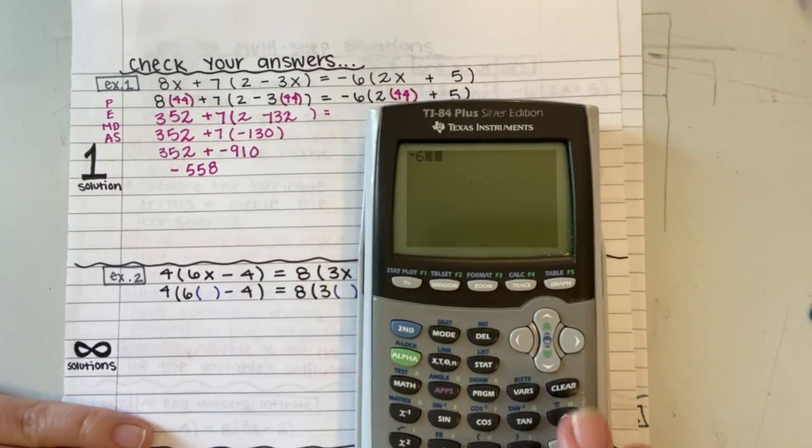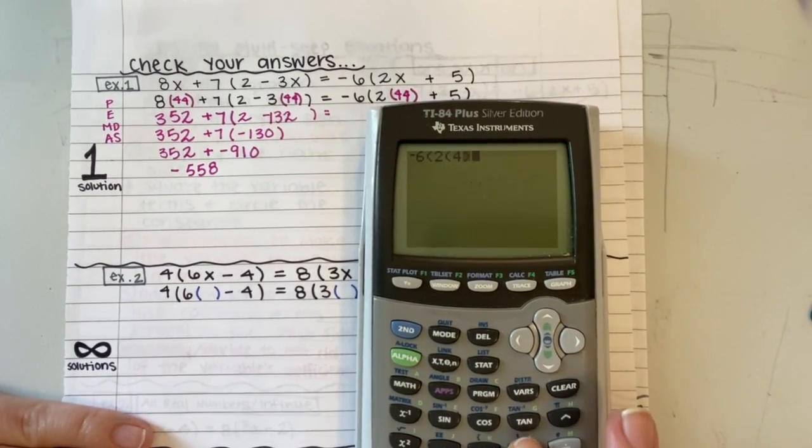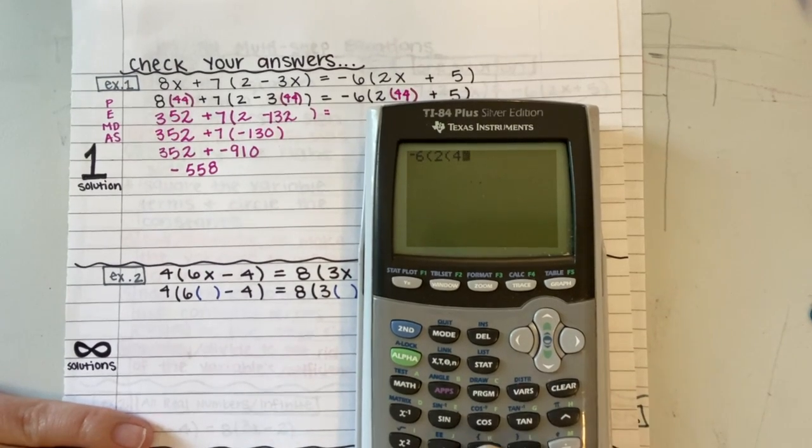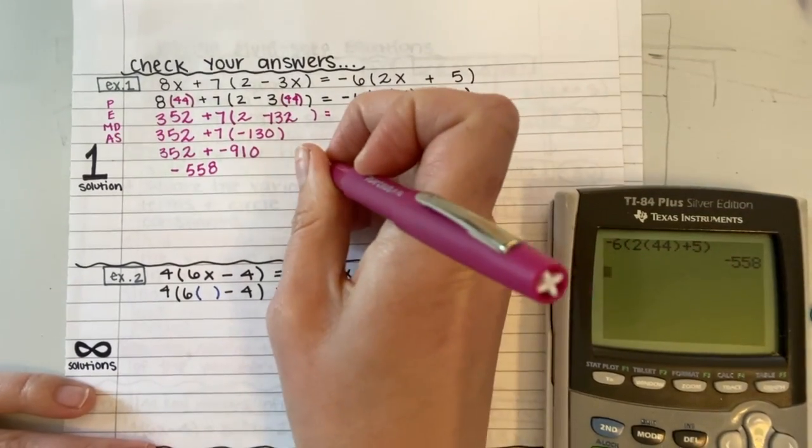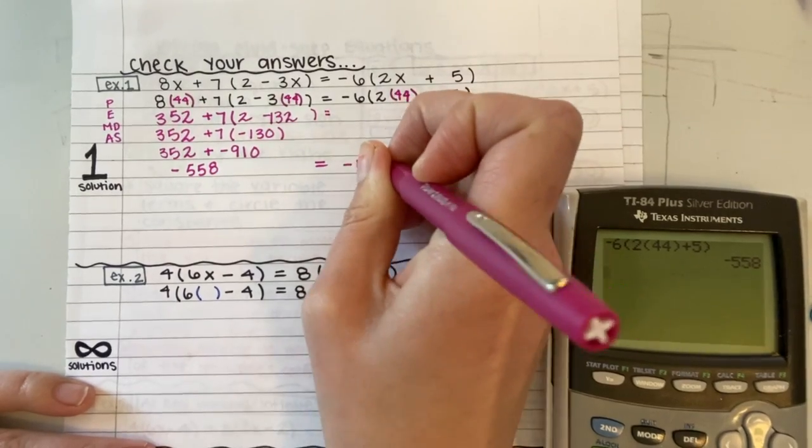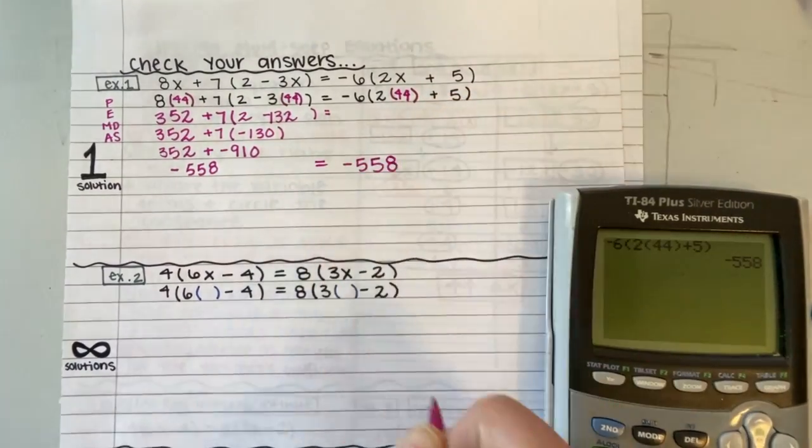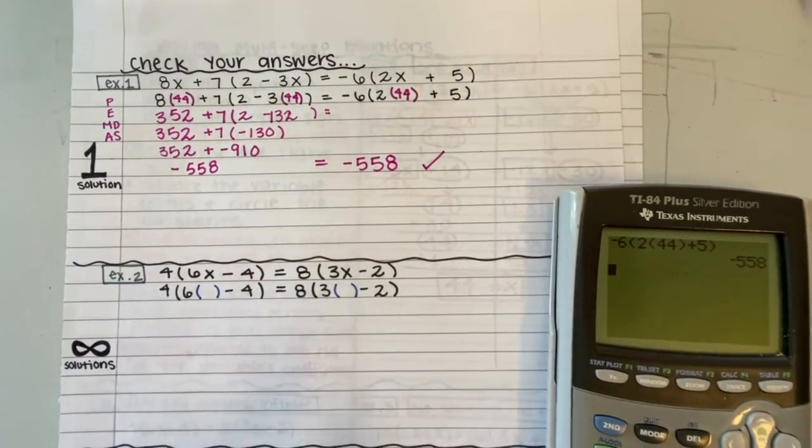Negative 6, 2, parentheses 44, close parentheses, plus 5, close the other parentheses. I get the same thing. So I know that I solved it correctly, because the same thing is on both sides of my equation. So the check worked.